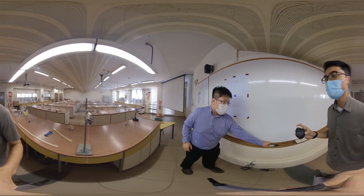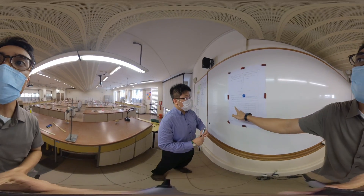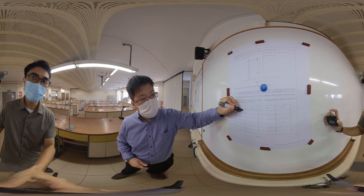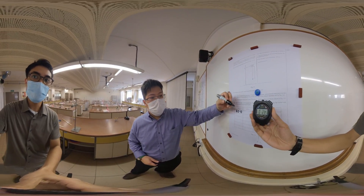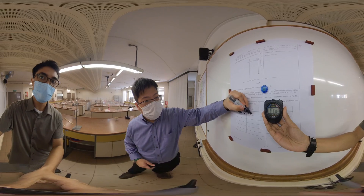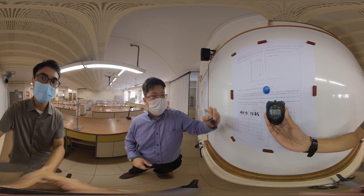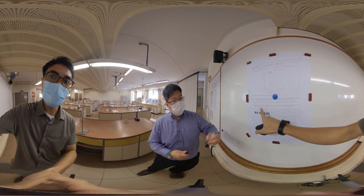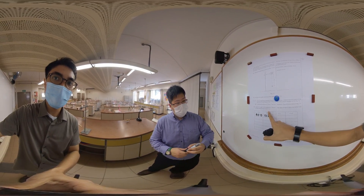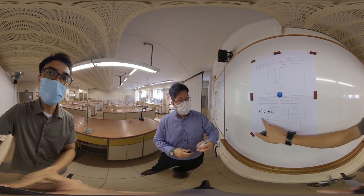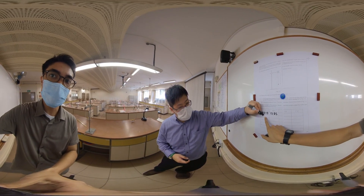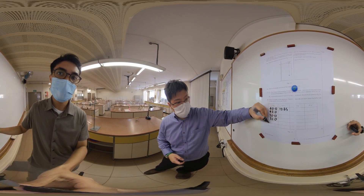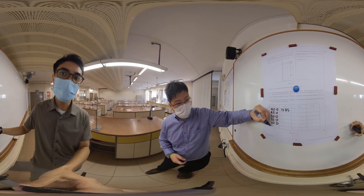Now we have to record our readings. Mr. J will use the marker. The first take was at 40 cm, so you write down 40.0 cm and the time taken is 12.85 seconds. We'll need to use lengths between 30 cm and 70 cm, so we'll use 45, 50, 55, 60, and 65 cm.